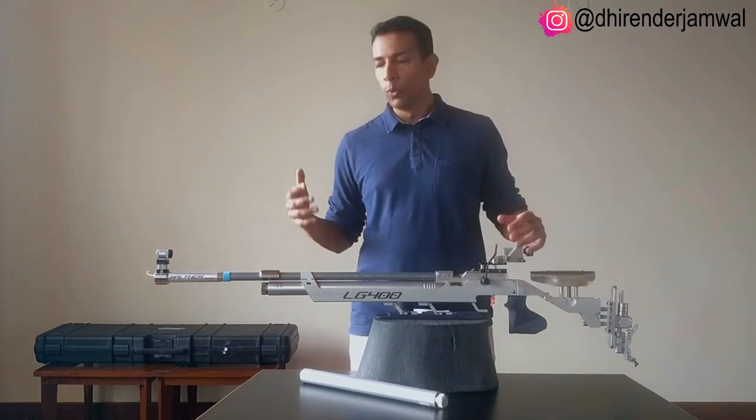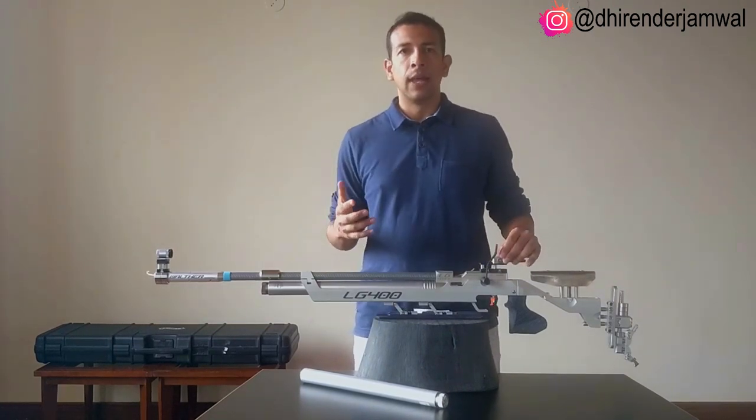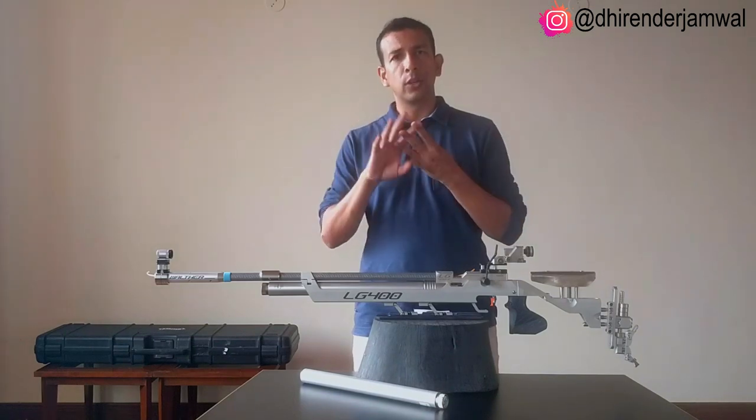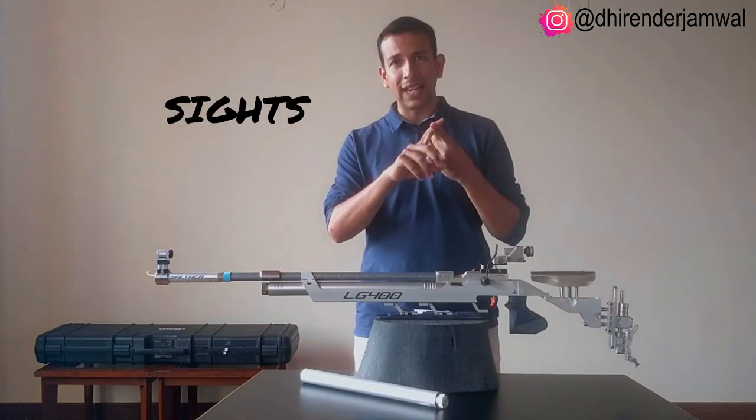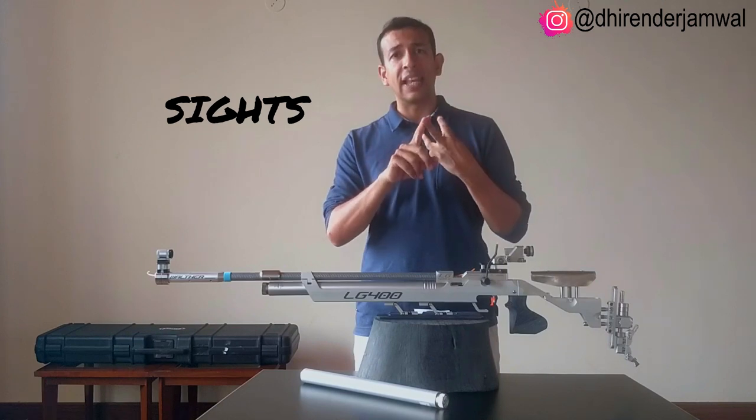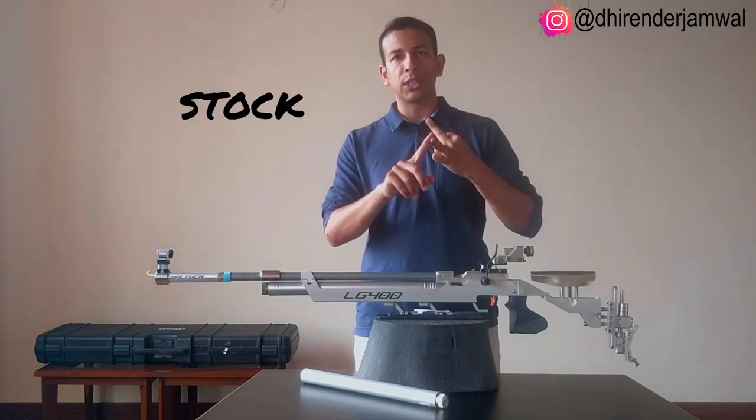Now let's move to the parts of an air rifle. The parts of an air rifle is broadly divided into three parts. We have the sights, we have the barrel action and we have the stock.